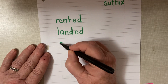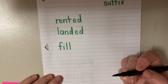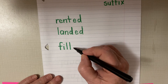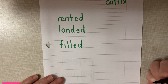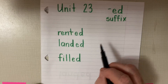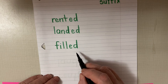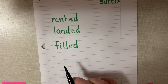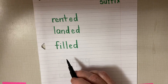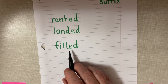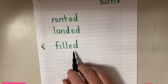Here's another word: fill. I filled my water bottle at the fountain. We call these two letters the -ed suffix. So we've added -ed and we've changed the meaning of the base word — now we know that that happened in the past. The word 'filled' has the letters ll at the end. What sound do we hear at the end of 'filled'? We hear the d sound: filled.